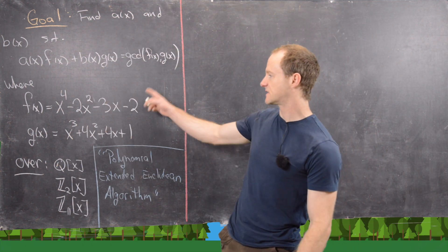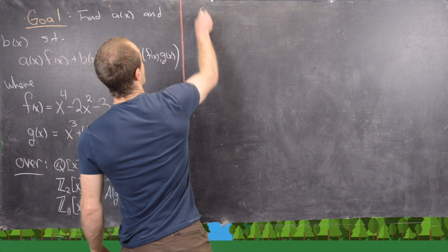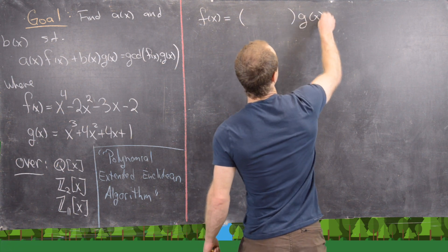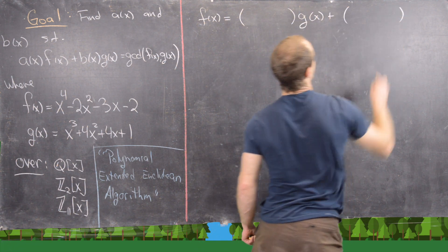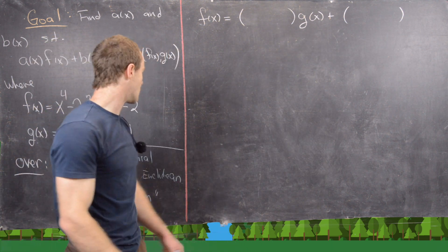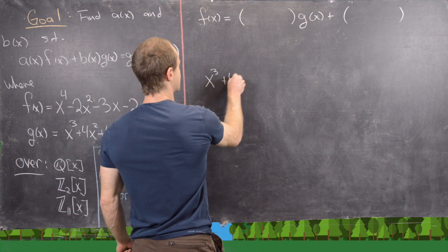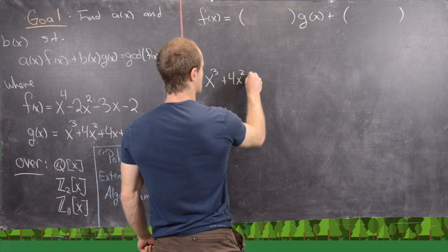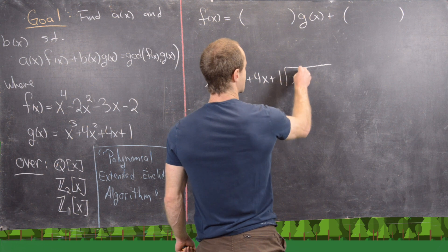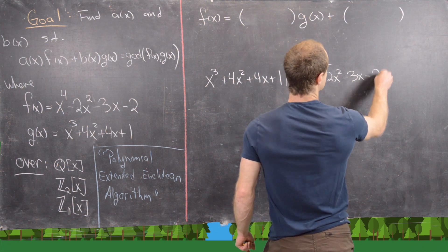Our first goal is to find the quotient and remainder when dividing f by g — that is, to write f(x) equal to some polynomial times g(x) plus some other polynomial, where the first is the quotient and the second is the remainder. We'll do that with polynomial long division. We need to take g(x) = x³ + 4x² + 4x + 1 and divide it into f(x) = x⁴ − 2x² − 3x − 2.